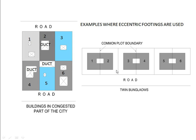So where would you encounter such a footing? In the first sketch, buildings numbered 1 through 6 are adjoining each other without any gap, sharing a common plot boundary with no side margin. This situation can occur in the congested part of a city. Any column located on the common face of two buildings will have an eccentric footing, as it cannot extend on both sides. The same applies to houses sharing a common plot boundary — columns on that boundary require eccentric foundations.